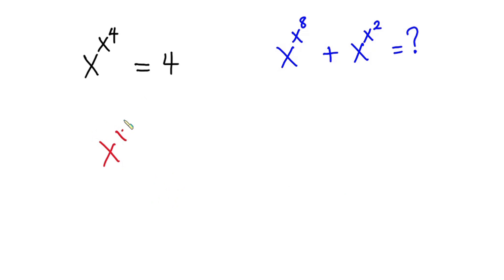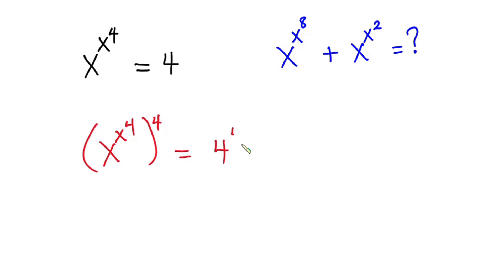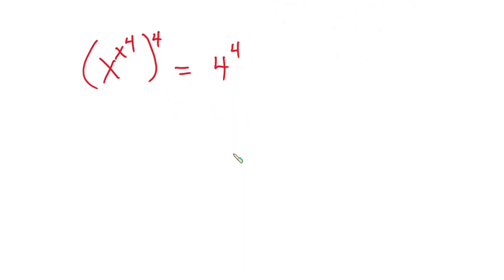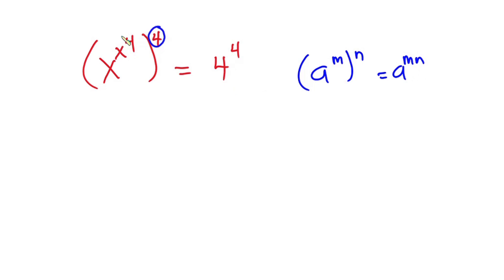So we have x to the power x to the power 4 is equal to 4. The first thing I'm going to do is raise each side of the equation to the fourth power. From indices, if I have a to the power m to the power n, this is the same as a to the power mn. So I'm going to multiply this power by this whole thing.